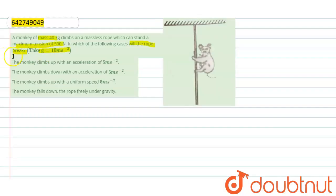Question is, a monkey of mass 40 kg climbs on a massless rope which can stand maximum tension of 500 N. In which of the following cases will the rope break? g equal to 10 meter per second squared.